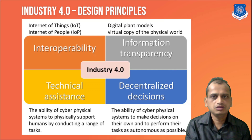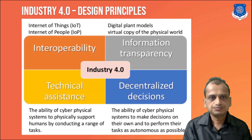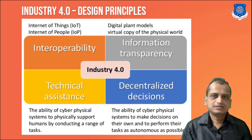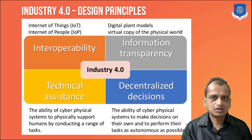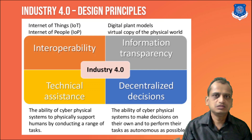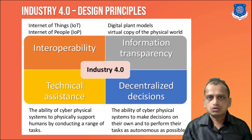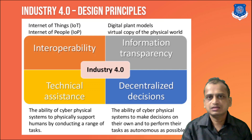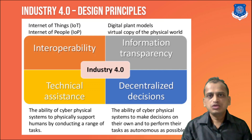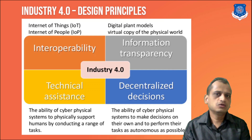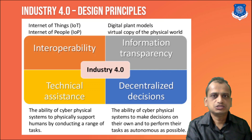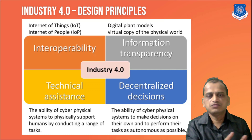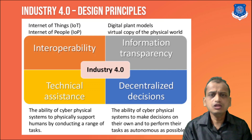The third principle is decentralized decisions — for example, autonomous cars or autonomous robots can think on their own and self-optimize while performing tasks, deciding independently. This is a key characteristic and principle of Industry 4.0 that will help the technology move forward toward the personalization goals of Industry 5.0.